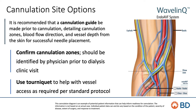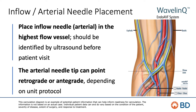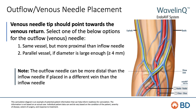Once the cannulation zones have been identified, apply a tourniquet to the patient's arm to help with vessel access. Place the inflow or arterial needle in the highest flow vessel. The needle tip can point retrograde or antegrade, depending on your unit's protocol. The outflow or venous needle tip should point towards the venous return. The needle can be placed in the same vessel as the arterial needle, as long as it is more proximal.